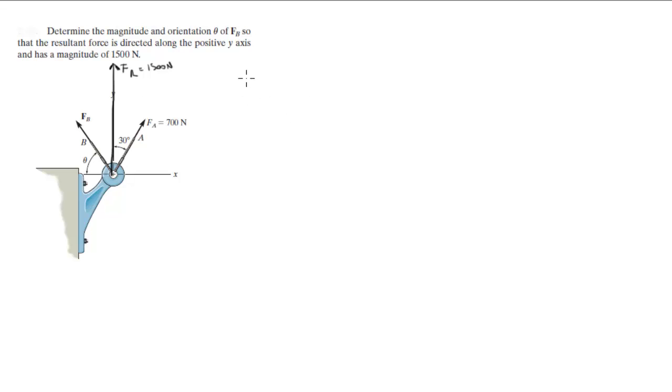So they're asking you what is FB. FA is equal to 700 sine of 30 i plus 700 cosine of 30 j. This comes out to be 350 i plus 606.2 j.